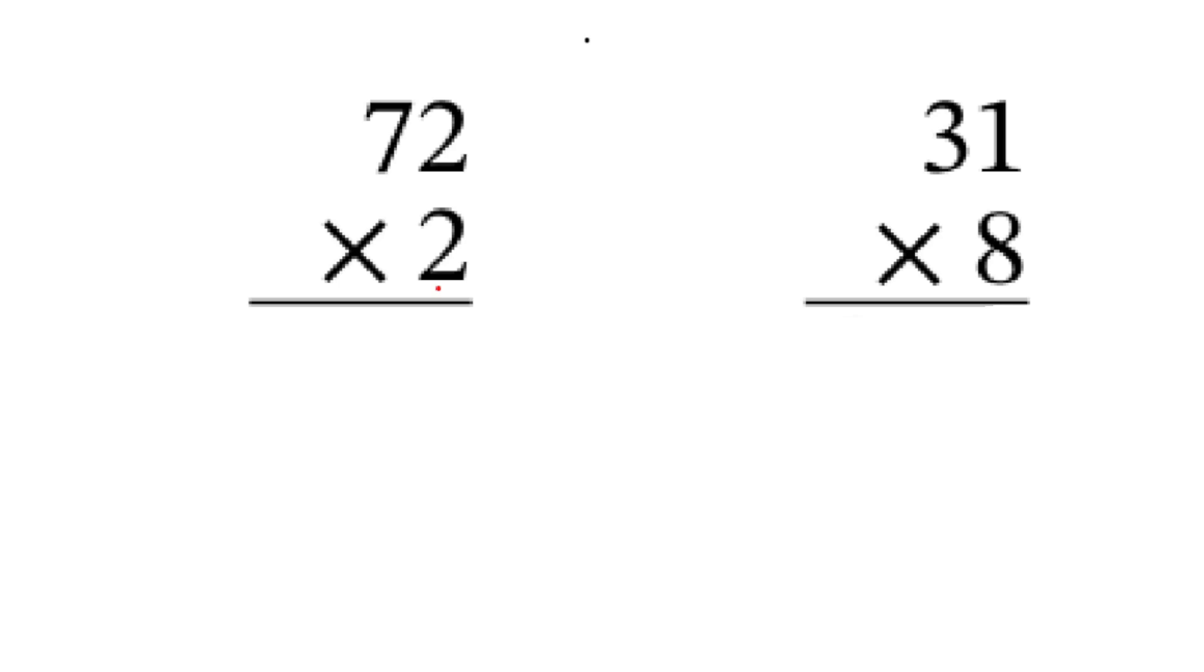Today, we're going to be multiplying two by one digit examples. What I mean by that is, for example, here you have a two digit. Anytime you have two numbers right beside each other, that would be a two digit. Here you would have a one digit because it is only one individual number.